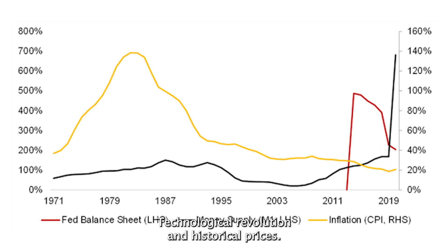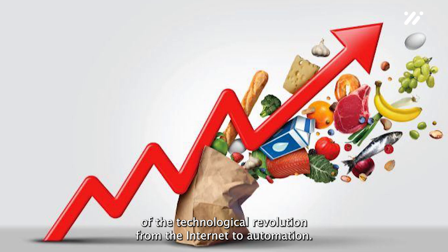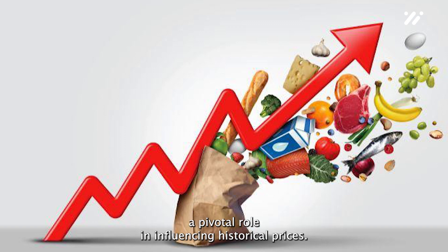Technological revolution and historical prices. The latter half of the 20th century witnessed the advent of the technological revolution. From the internet to automation, these advancements not only transformed how we live, but also played a pivotal role in influencing historical prices.